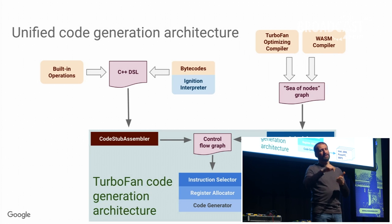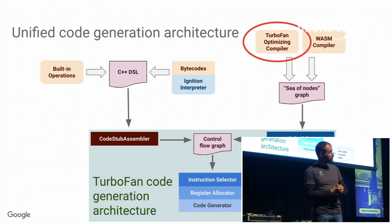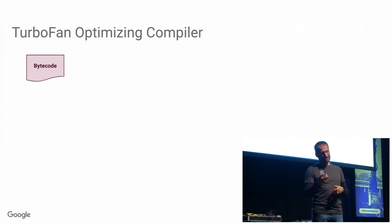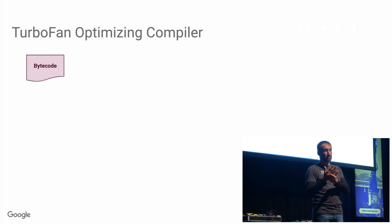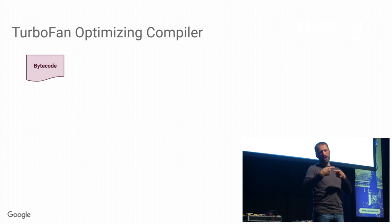Today we are going to briefly look into the optimizing compiler, which is what I was working on mostly, and I'm going to give you an overview of how that works currently. The optimizing compiler always starts with bytecode — it just takes whatever the interpreter generated and was running on, and then we turn this into something better based on the feedback.